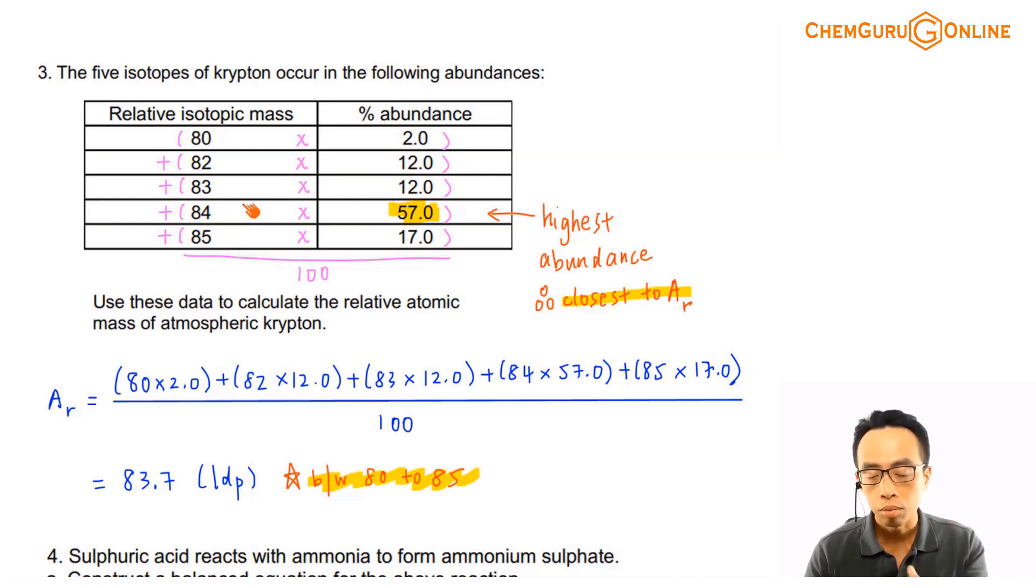Again, it makes sense, correct? Because I'm calculating the weighted average, it should lean towards the one with the biggest abundance. So 83.7 is closer to 84 than to any other isotope masses here.